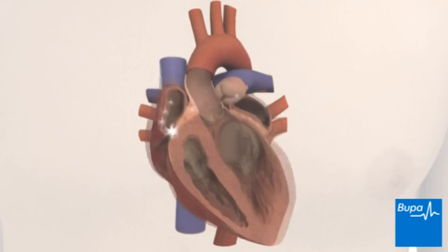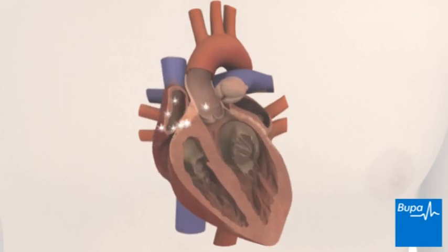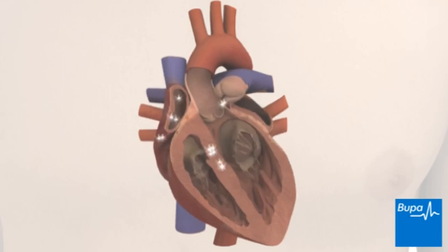In supraventricular tachycardia, or SVT, the irregular electrical impulses pass across the ventricles and back up into the atria in a circle, rather than travelling from the atria to the ventricles in one direction as they should. This makes the heart beat faster.